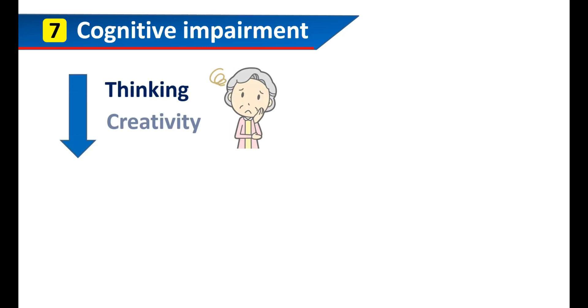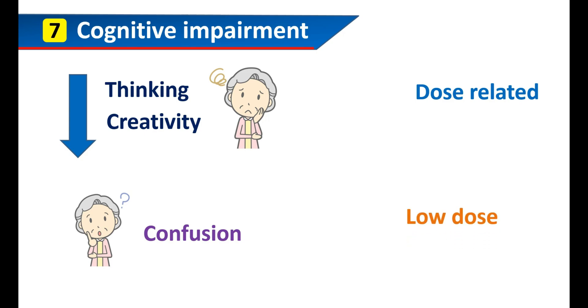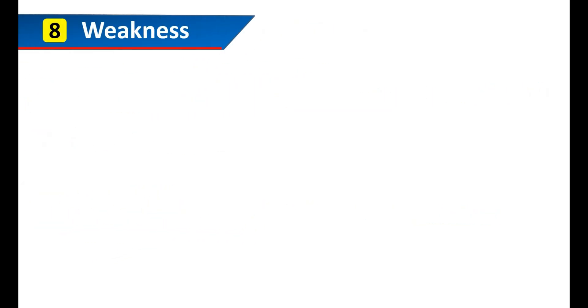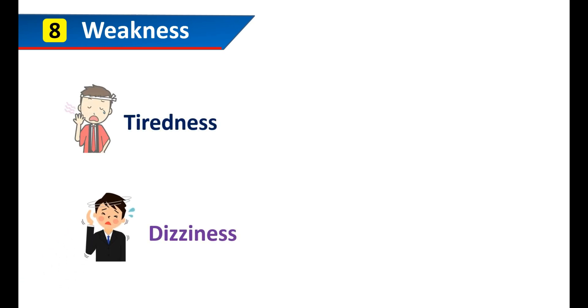The seventh one is cognitive impairment. The use of lithium may reduce thinking capabilities as well as creativity in people. It may also cause some confusion. These cognitive effects are dose-related and clearly observed with high dose of lithium. Therefore, it is better to use a low dose in case of cognitive impairment. The eighth one is weakness. The use of lithium can produce some tiredness and dizziness in people. It can also produce blurred vision and ataxia, a muscle incoordination that may result in loss of balance. These are commonly observed with use of lithium, particularly in the initial days.